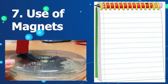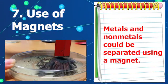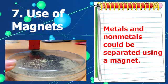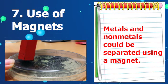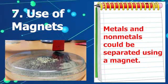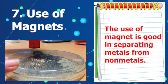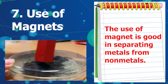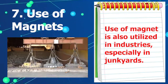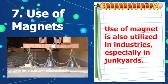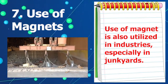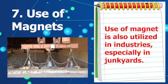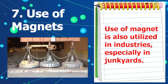Number seven: use of magnets. A mixture of metals and non-metals can be separated using a magnet. Metals are attracted to the magnet while non-metals are not. In this way, the use of a magnet is effective in separating metals from non-metals. This method is also utilized in industries, especially in junkyards, where metal scraps are removed from other materials using a big magnet.